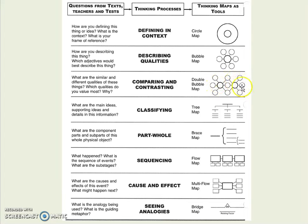A double bubble is like two bubble maps put together where you could have Miss Allen and Miss Jones and compare us. Miss Allen's brunette, Miss Jones is a blonde. Miss Jones is in school right now, Miss Allen is not. Miss Jones is the assistant principal, Miss Allen is an instructional coach, but we both work at Glide Middle School and we both are mothers of three. You compare and contrast — the similarities go in the middle and the differences go on the outside.